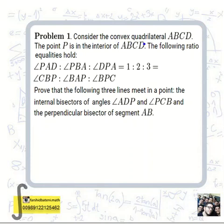Problem 1. Consider the convex quadrilateral ABCD. The point P is in the interior of ABCD. The following ratio equalities hold: angles PAD, PBA, and DPA have the ratio 1:2:3. And the angles CBP, BAP, and BPC have the same ratio. Prove that the following three lines meet in a point: the internal bisectors of angles ADP and PCB, and the perpendicular bisector of segment AB.